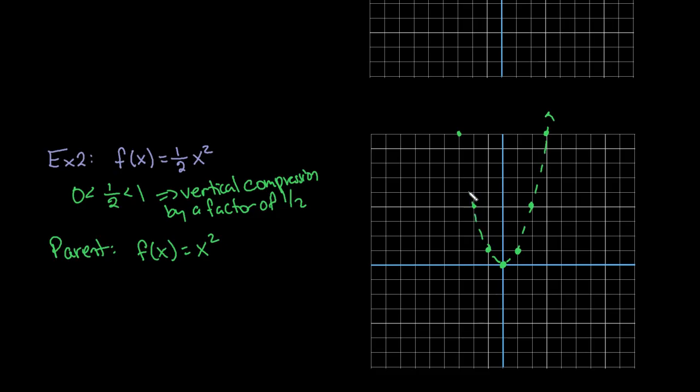And then if we look at our compression, let me pick a different color here. So our compression is going to be half as much. So if we're looking at our output, our output is our y-coordinate. So half of 0 is still 0. Half of 1 would be 1/2. Half of 4 would be 2. And then half of 9 would be 4 and a half.